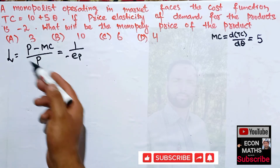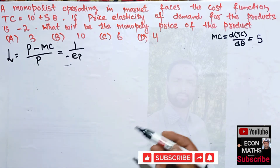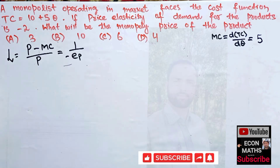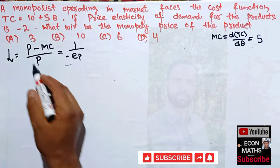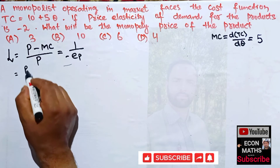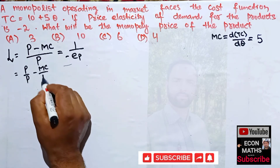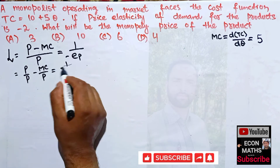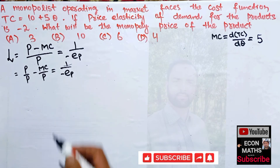To find the monopoly price we will solve the Lerner's Index relation for price. We can write it as: (P - MC) / P = 1 / (-EP), where EP is the price elasticity of demand.